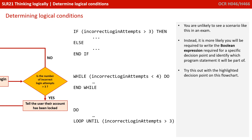Now you might have looked at this and decided that this can happen up to three times — there can be up to three incorrect logins before an account is locked. So actually this logical condition, this Boolean expression, should be part of some form of iteration. You might have chosen to say, while incorrect login attempts is less than four, we carry on prompting the user to log on. Or maybe do the following code until the incorrect login attempts is greater than three. This will depend on the language you're using and what statements you have available to you, but hopefully you've got something along the lines of the various options we've shown you here.